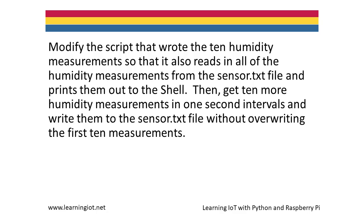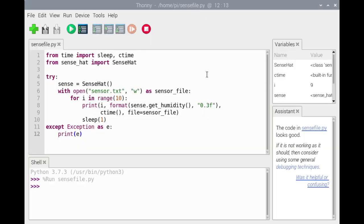Next we'll modify the script so that it also reads in all of the humidity data from sensor.txt and prints it out to the shell. We'll then get 10 more humidity measurements and write them to the sensor.txt file without overwriting the previous contents. In order to enable read-write access, we'll change the argument passed for mode from w to r+.